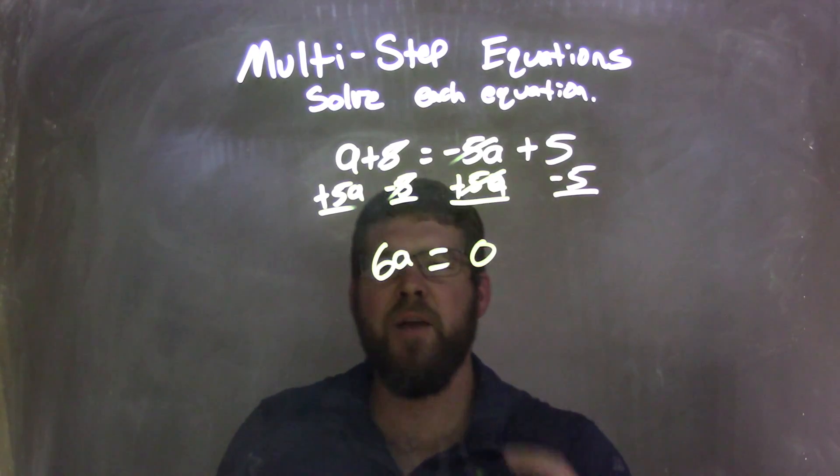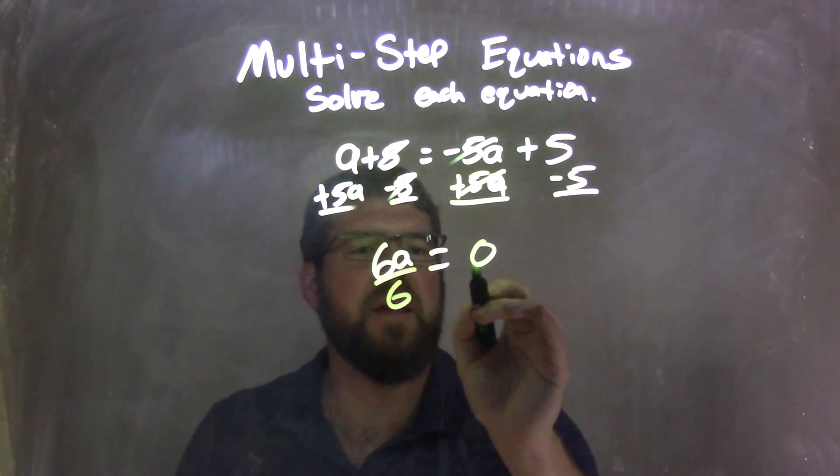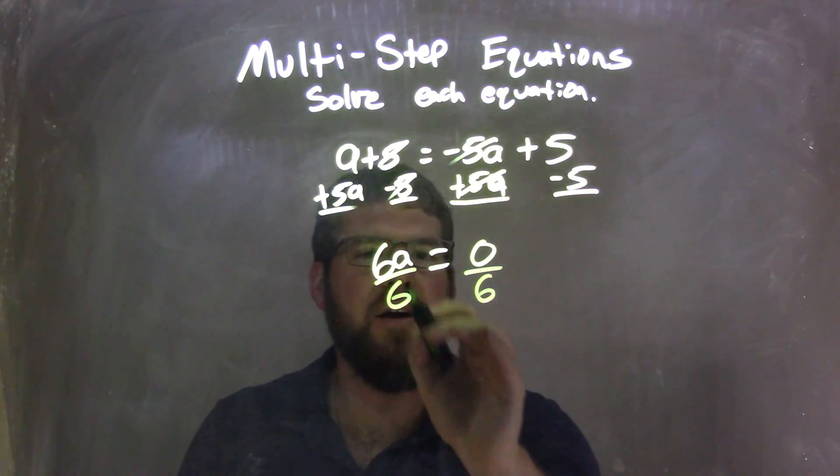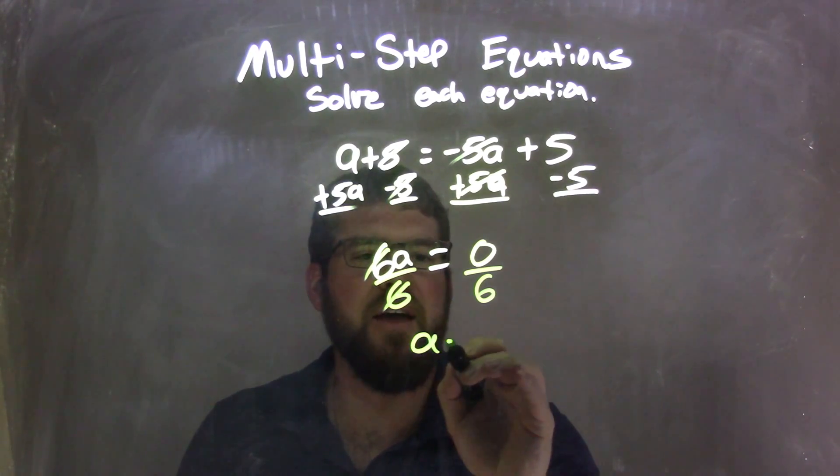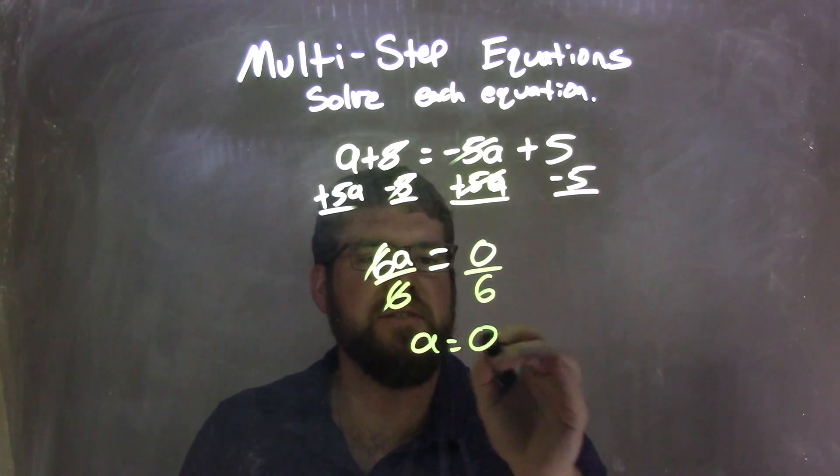Well, now I have to divide by 6, which is opposite of multiplication going on there. And so now I have, well, 6 is canceled. We're left with A here equals 0 divided by 6, which is 0.